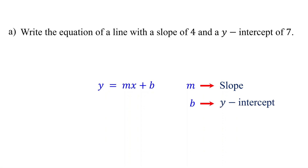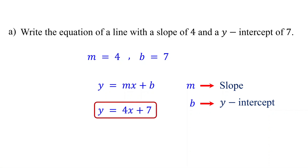First, identify the slope and y-intercept. The slope is 4 and the y-intercept is 7. Next, substitute these values into the equation. Replace m with 4 and b with 7. And that's it — this is the equation of the line in slope-intercept form.